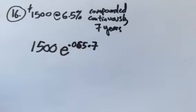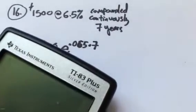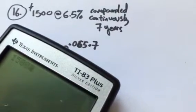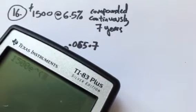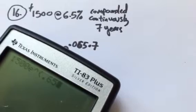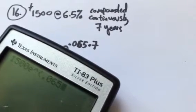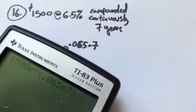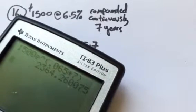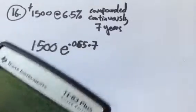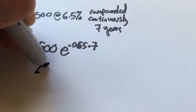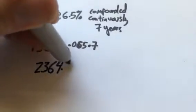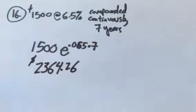Let's grab our calculator and see what we can do with this. 1500, and then E to the — in parentheses — .065 for 7 years. Looks like about that much. Since it's money, I'm going to round it to two decimal places. There it is.